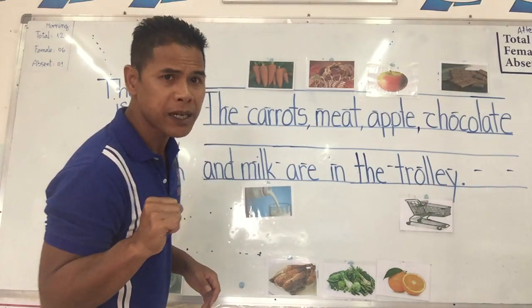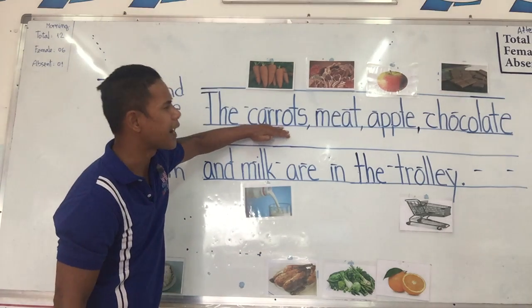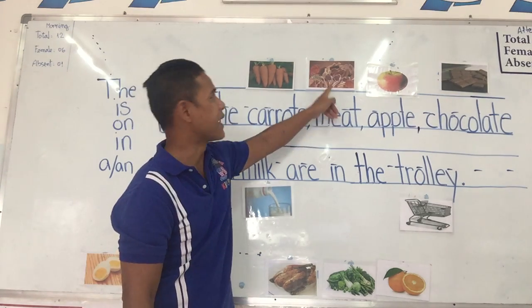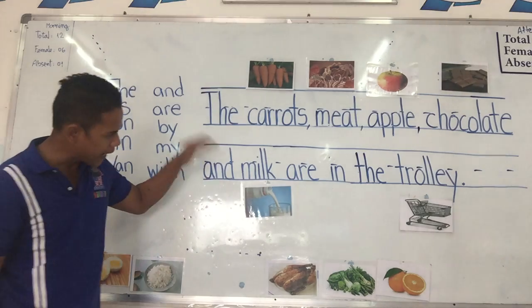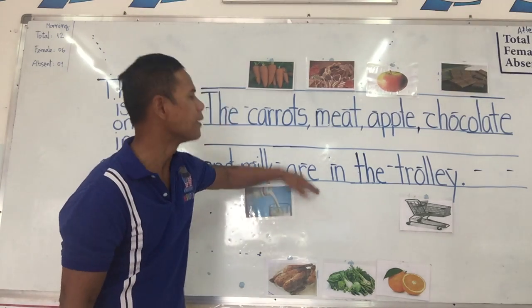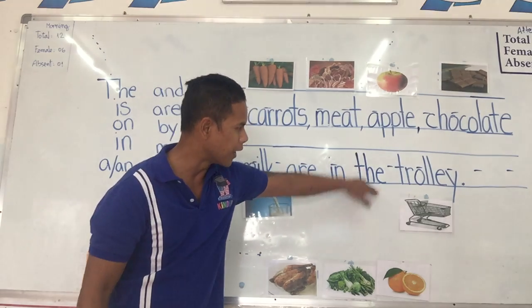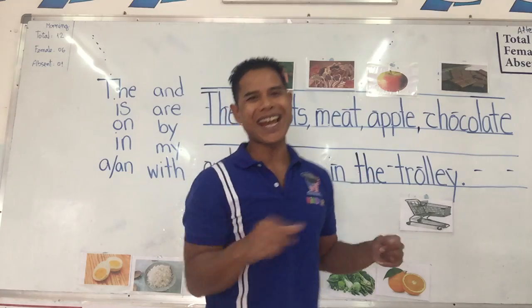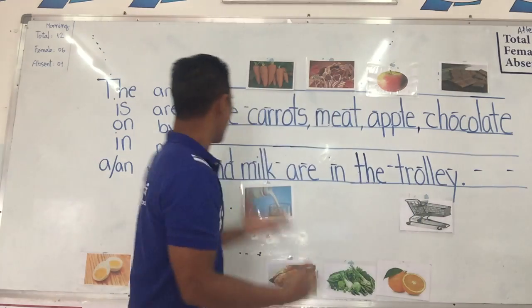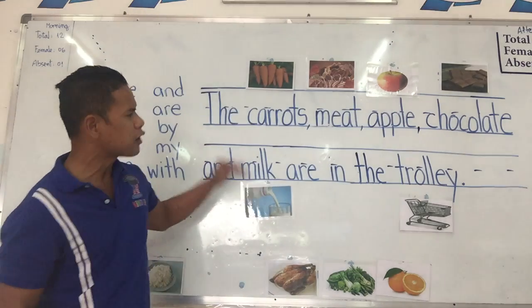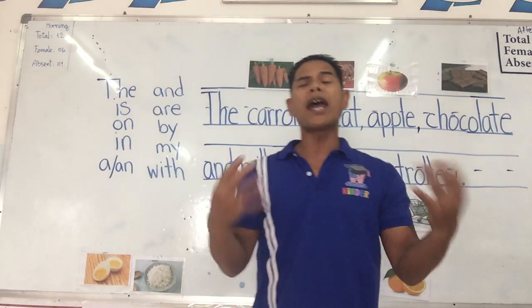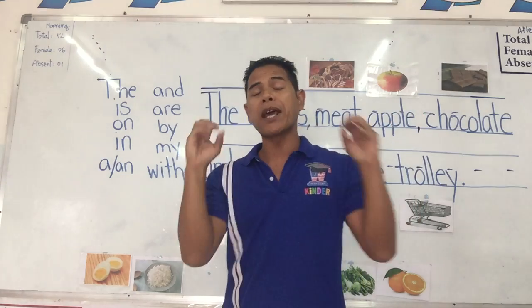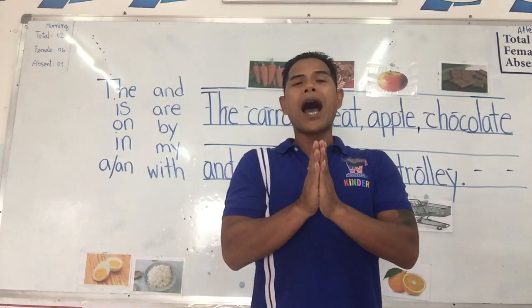Can you read it for me? Meat, apple, chocolate, and milk — the what are in the trolley. Excellent job! Perfect. The carrots, meat, apple, chocolate, and milk are in the trolley. That's what I buy in the store. That brings us to the end of our lesson on using food items and reading them in a sentence. I will see you in the next lesson — bye-bye!